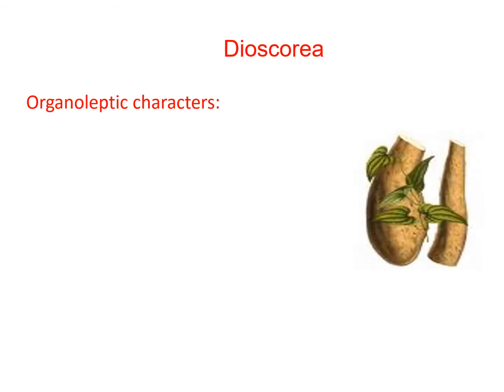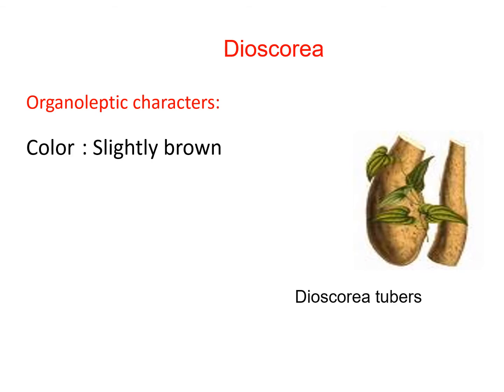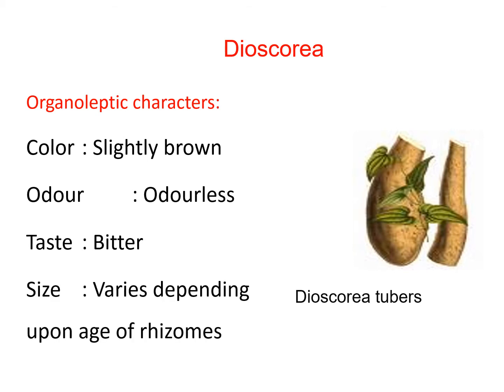Dioscoria has organoleptic characters as follows: color is slightly brown, odor is odorless, taste is bitter, and size varies depending upon the age of the rhizome. The tubers are shown in the picture.